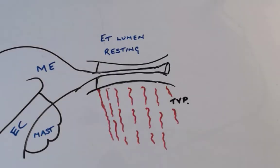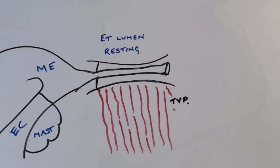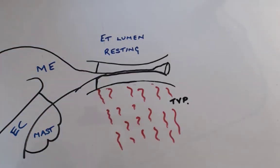This results in dilation of the eustachian tube and an equilibrium of the gas pressures between the middle ear and that of the nasopharynx.